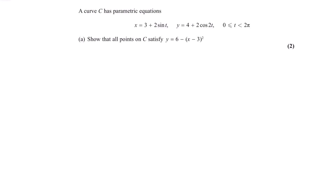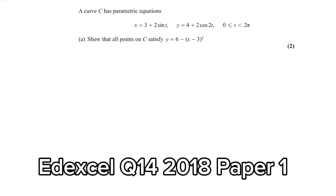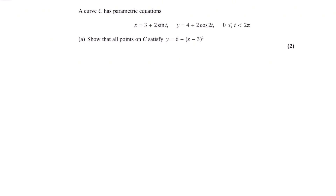Today we're going to be going through a few of what I believe to be some of the hardest A-level questions. Now without further ado, let's get straight into it. So in this first question, it's made up of multiple parts. We're going to do part A first — it gets harder later on. In part A we have a curve C with parametric equations x equals 3 plus 2 sine t and y equals 4 plus 2 cos 2t, and we are told to show that all points on this curve C satisfy this equation.